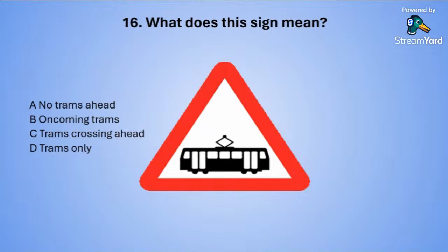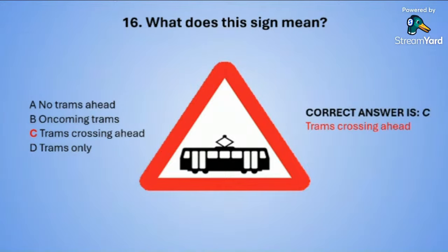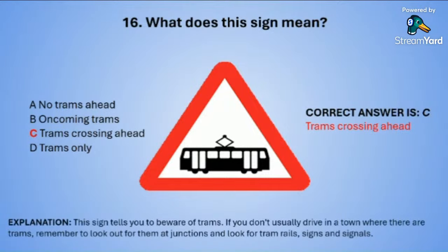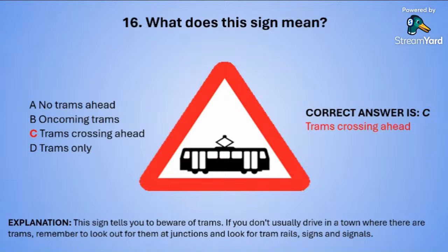The correct answer is C — trams crossing ahead. This sign tells you to beware of trams. This is a triangle warning sign. If you don't usually drive in a town where there are trams, remember to look out for them at junctions and look for tram rails, signs and signals.